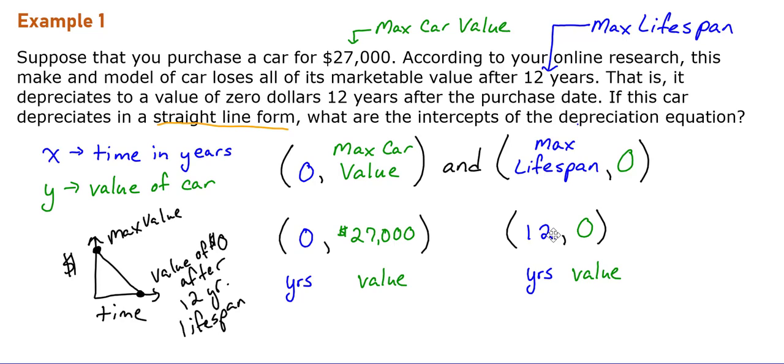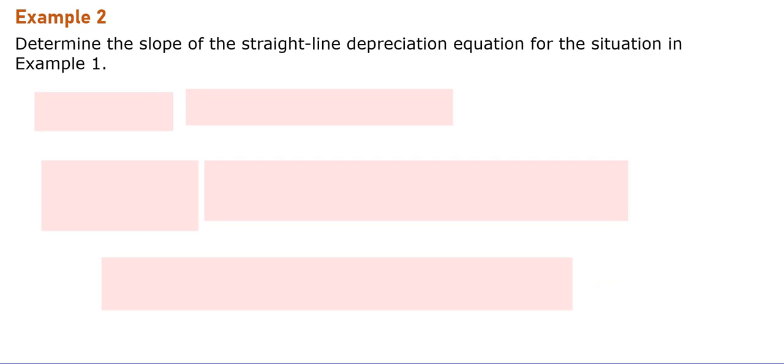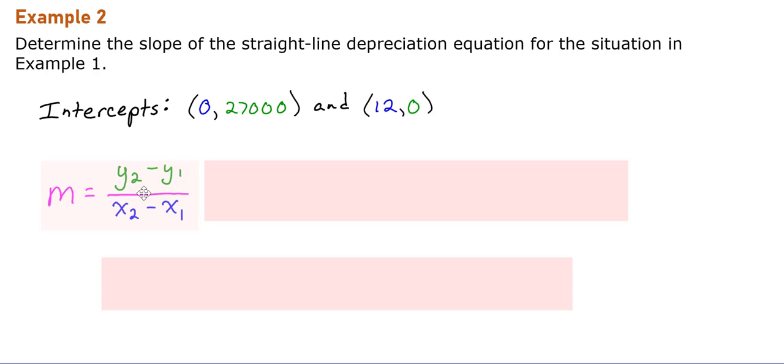To create our depreciation equation, we use those two intercepts to determine the slope. We're going to take those two intercepts, (0, 27000) and (12, 0), and use the slope formula that we've used in past algebra and geometry classes to figure out at what rate our car is depreciating each year.